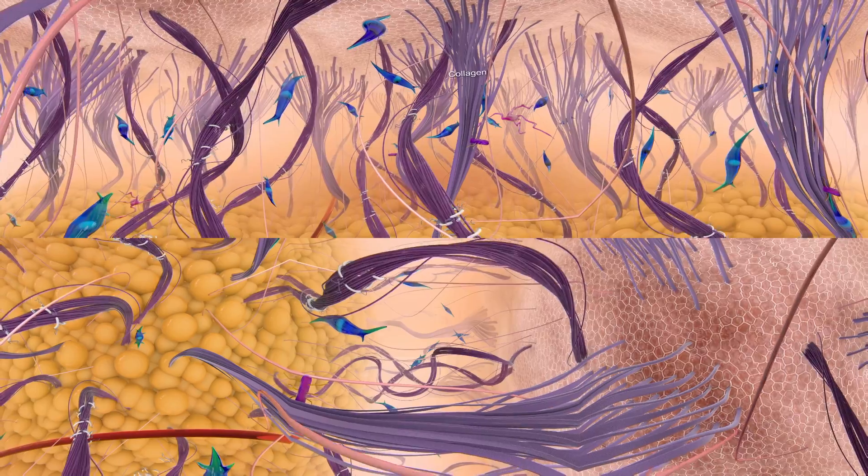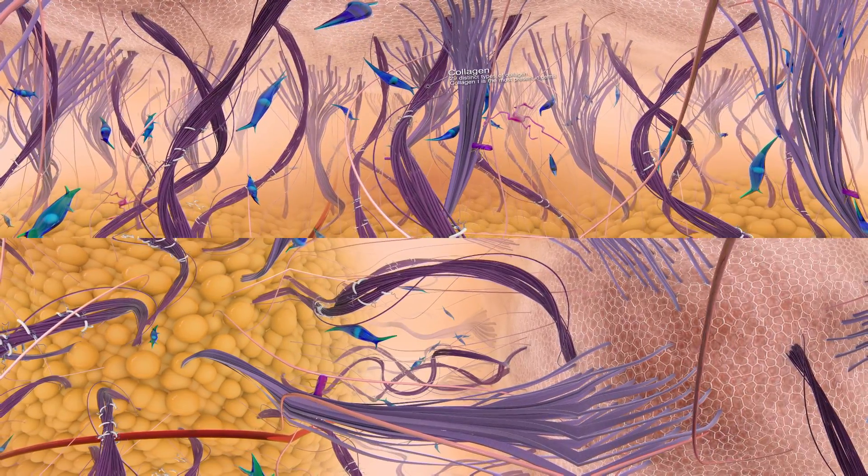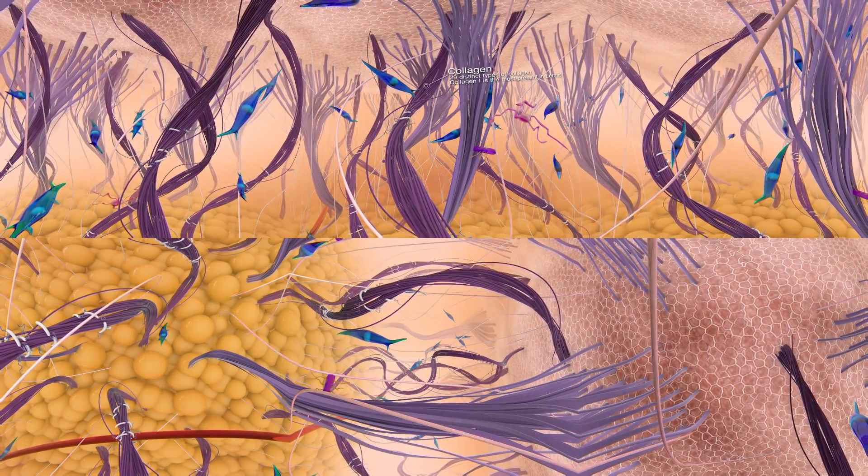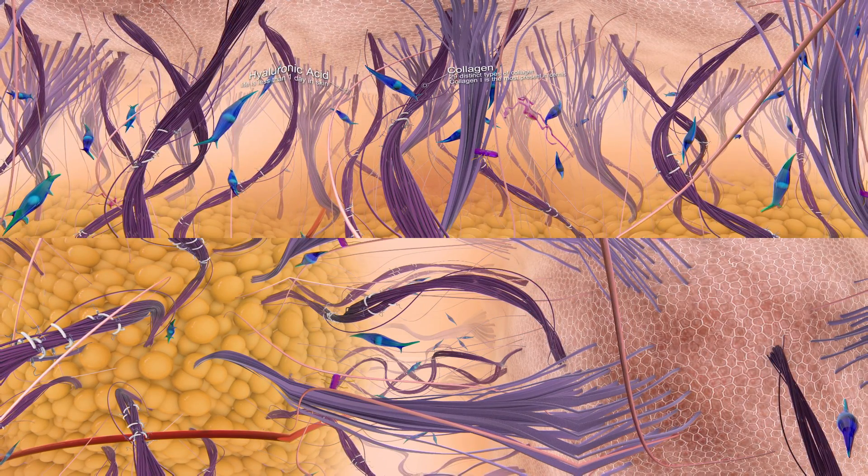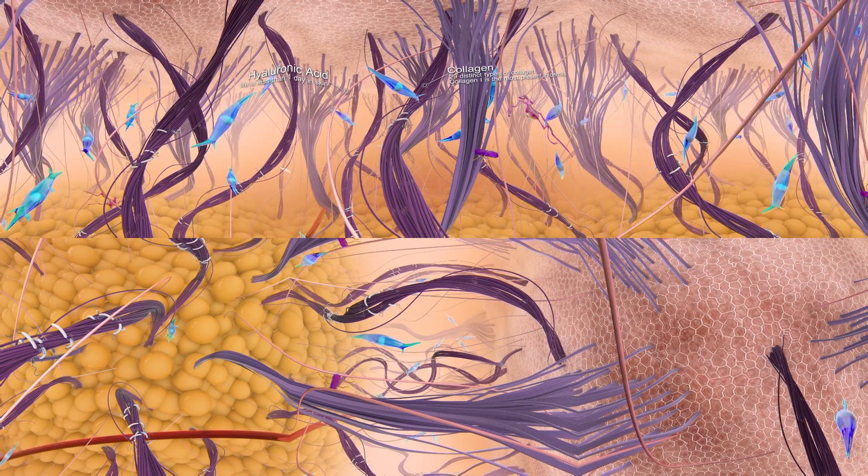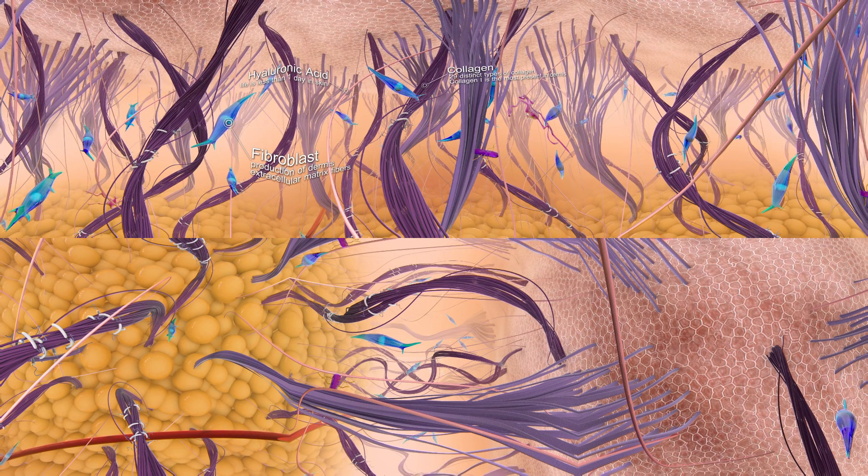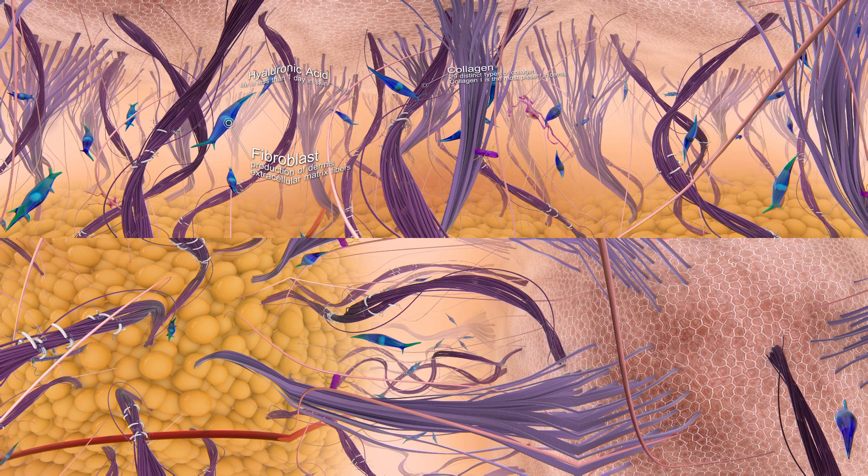In dark purple, large collagen fibers bring firmness. In pale pink, hyaluronic acid molecules bring hydration and viscoelasticity. All around you, in blue, there are active cells called fibroblasts producing elastic fibers, collagen, hyaluronic acid and proteoglycans.